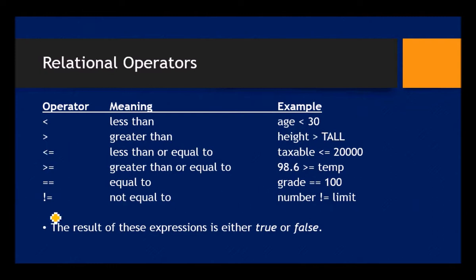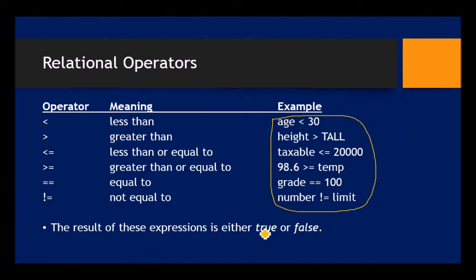All of these operators, when you use them the way we see in these examples, they result in either a true or a false. In your program you would include a statement that did one of these tests, and the result would be true or false based upon whatever variables or values you're comparing.